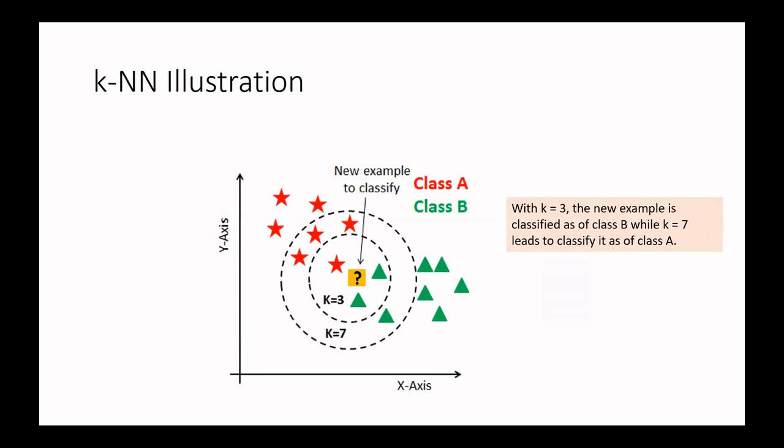Suppose we specify K equal to three — we look at three neighbors. In this case the answer is different, because two of the three neighbors are from class B, so the example is classified as class B.